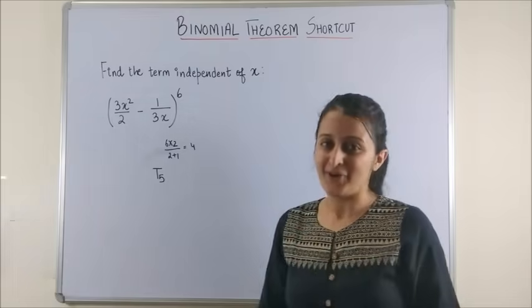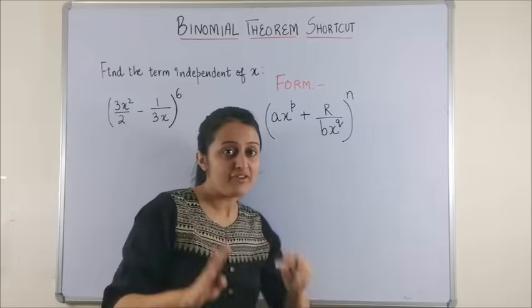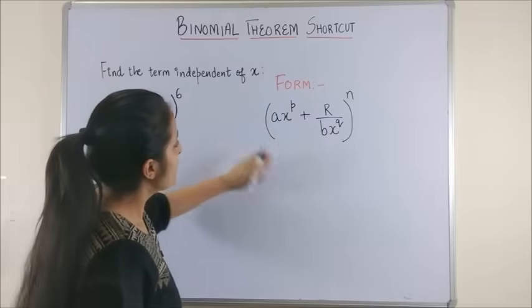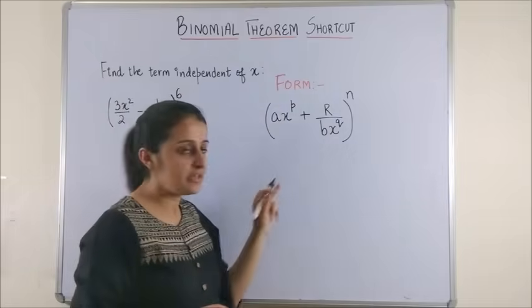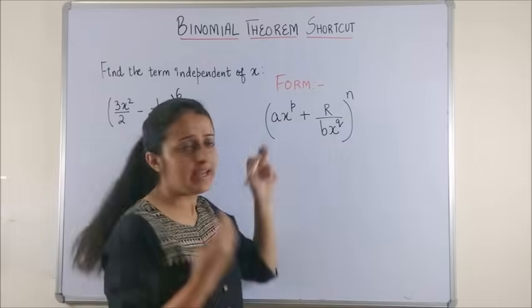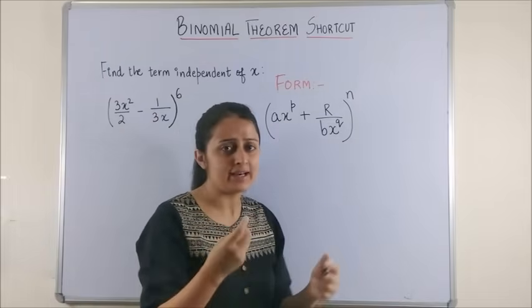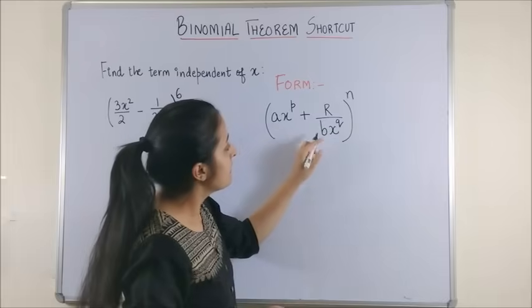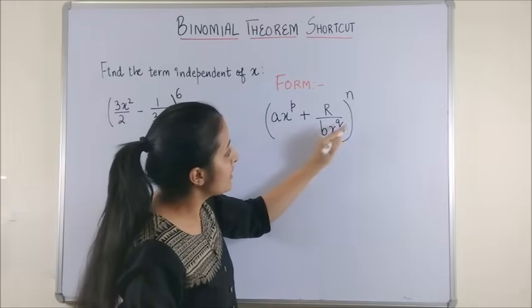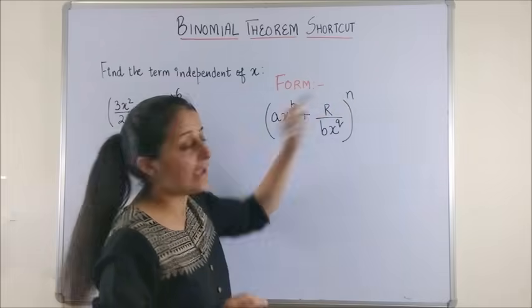So, if you ever come across this form which is a times x raised to power p plus r (r could be any number, any constant) upon b times x, whole raised to power q, whole raised to power n.